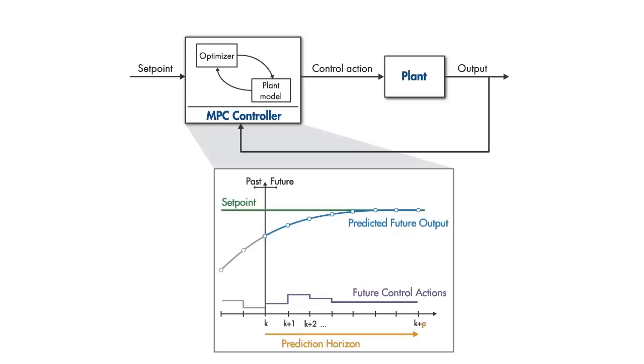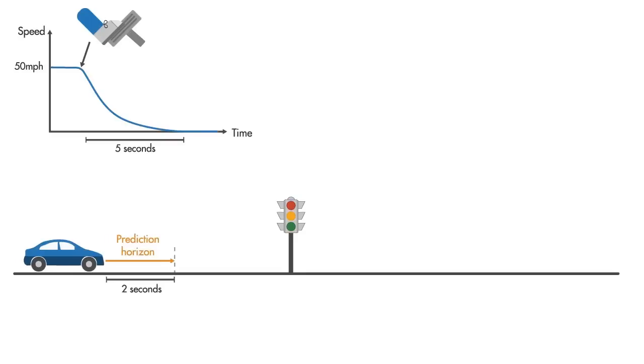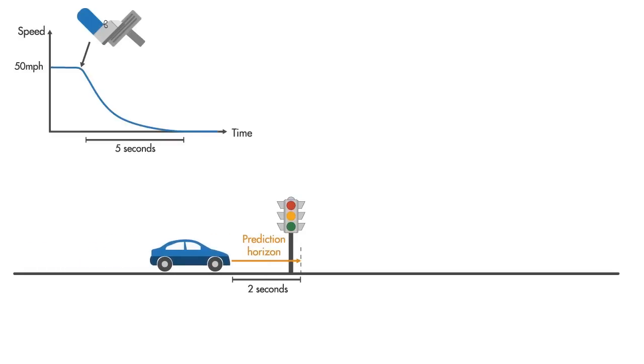What happens if it's too short? Think of the following example. While going at 50 miles per hour, you know that it will take your car 5 seconds to stop if you press on the brake pedal. If your prediction horizon is 2 seconds, by the time you see the traffic lights, it will be too late to apply the brakes. The car will only be able to stop after passing the traffic lights.